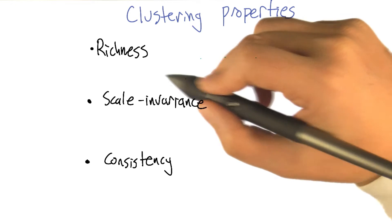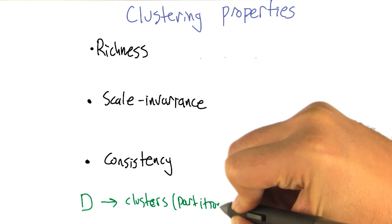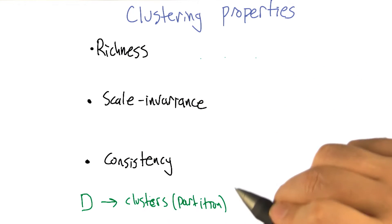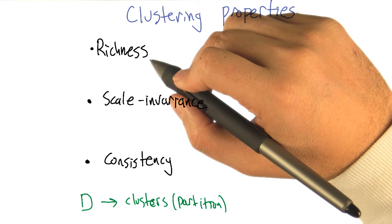All right, so if you have a clustering algorithm, what does it do? It takes a set of distances, D, and maps them to a set of clusters or partitions. Right, and these are three properties of those kinds of mappings.